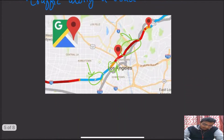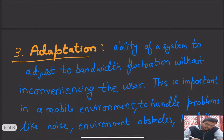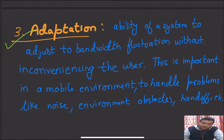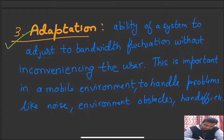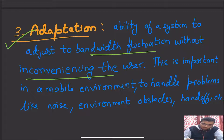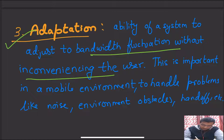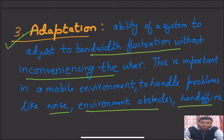Coming to our third point, adaptation. Adaptation is the ability of a system to adjust to bandwidth fluctuation without inconveniencing the user. This is important in a mobile environment to handle problems like noise, environment obstacles, and handoffs for a smooth mobile communicating experience.